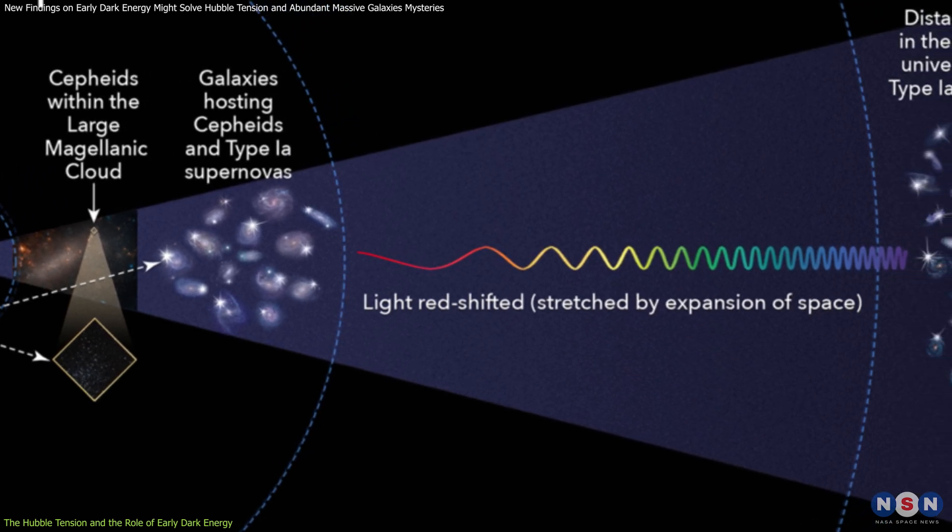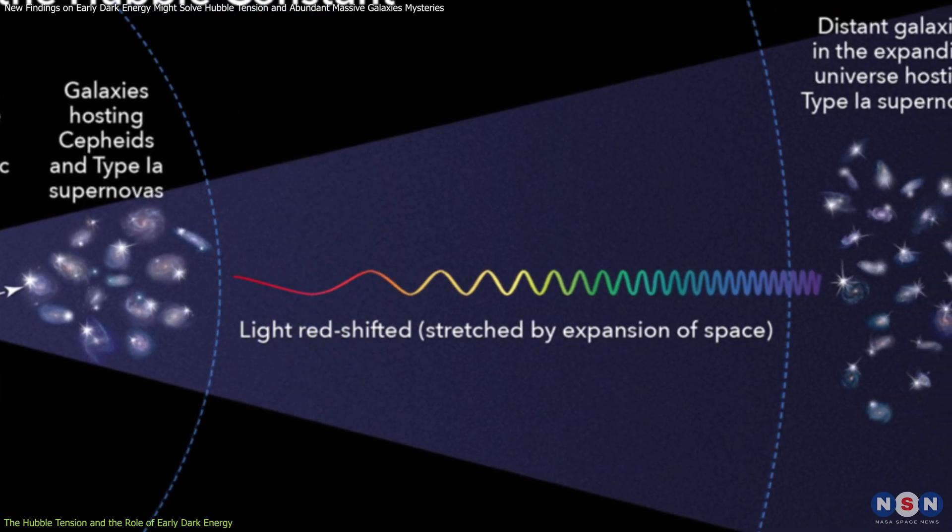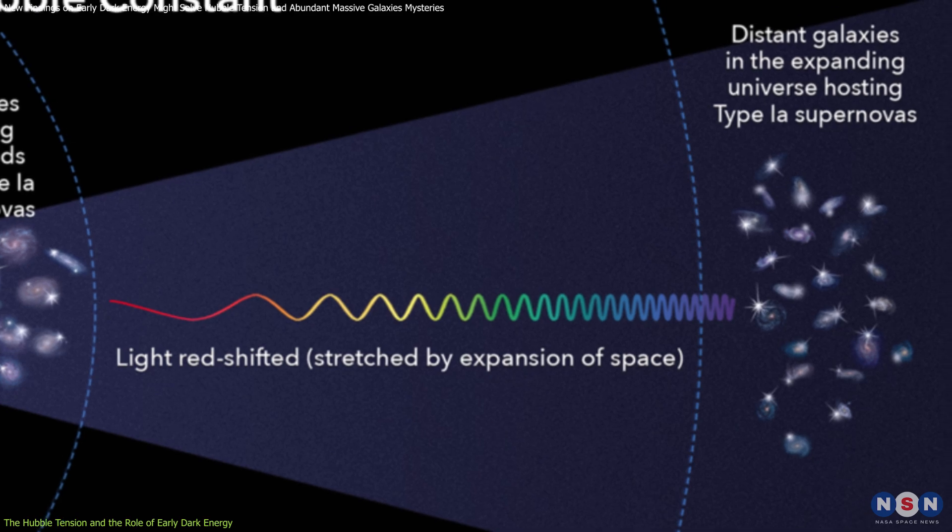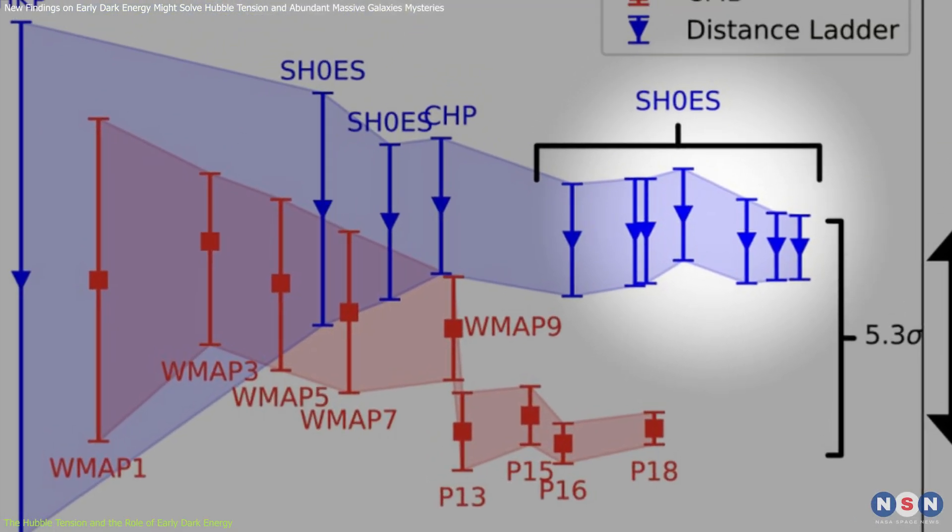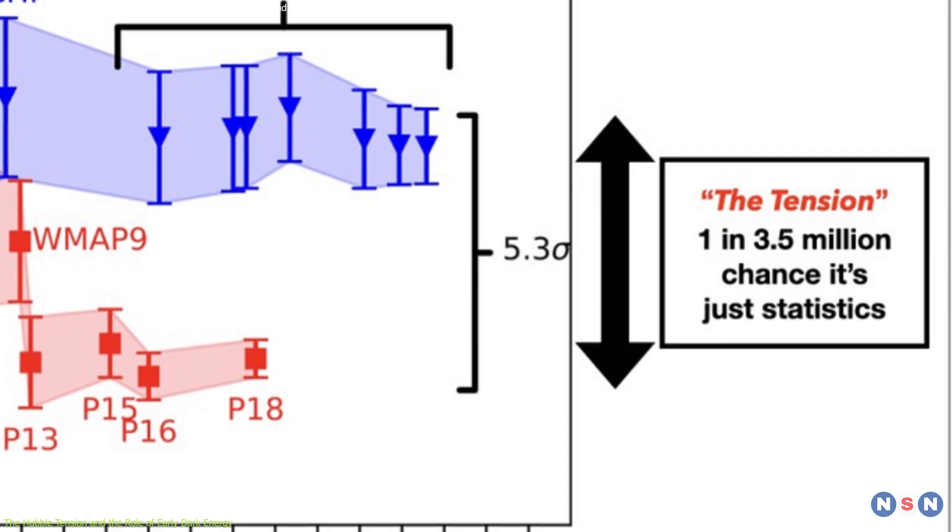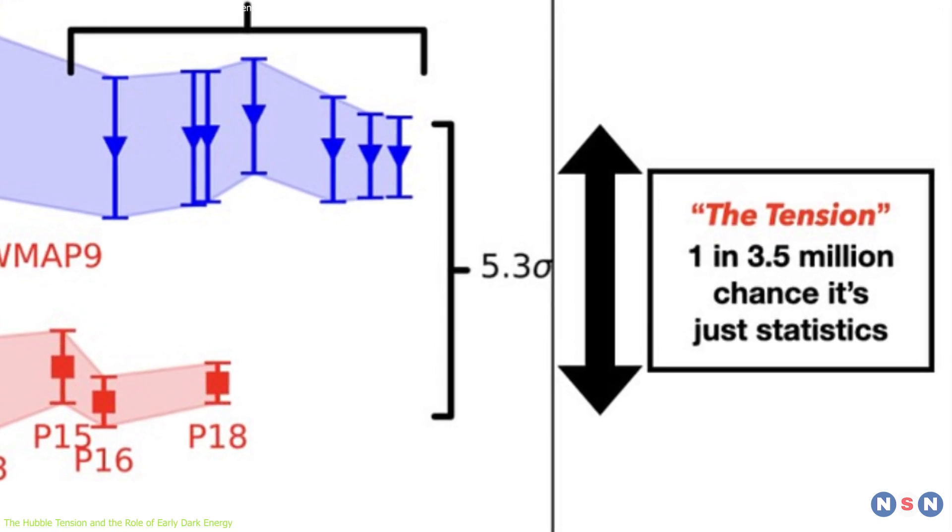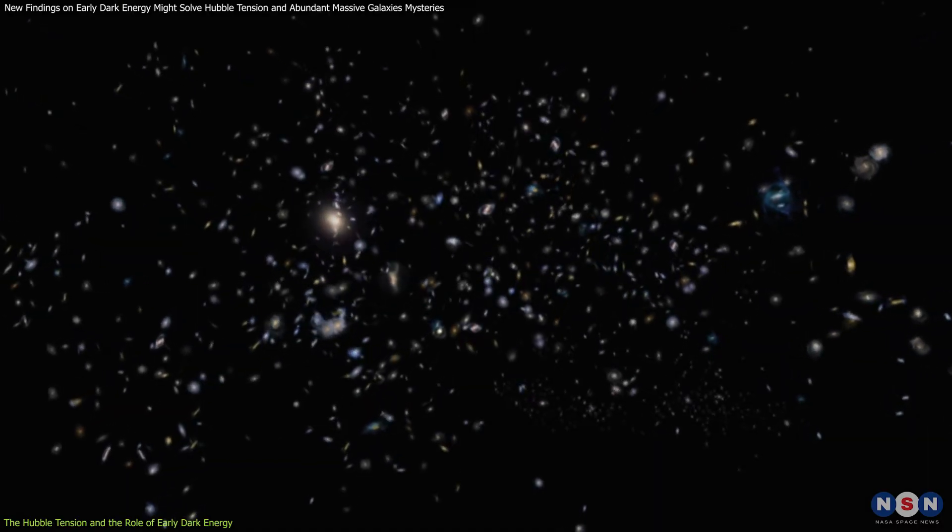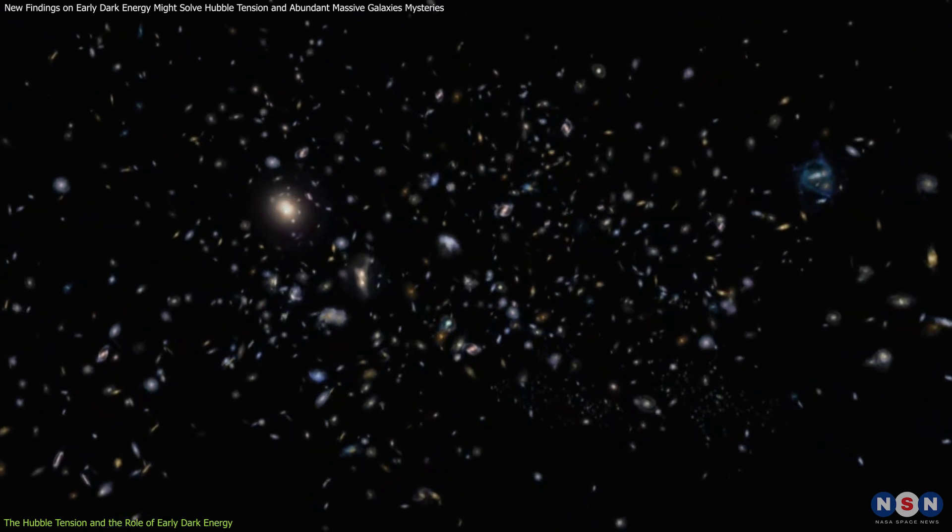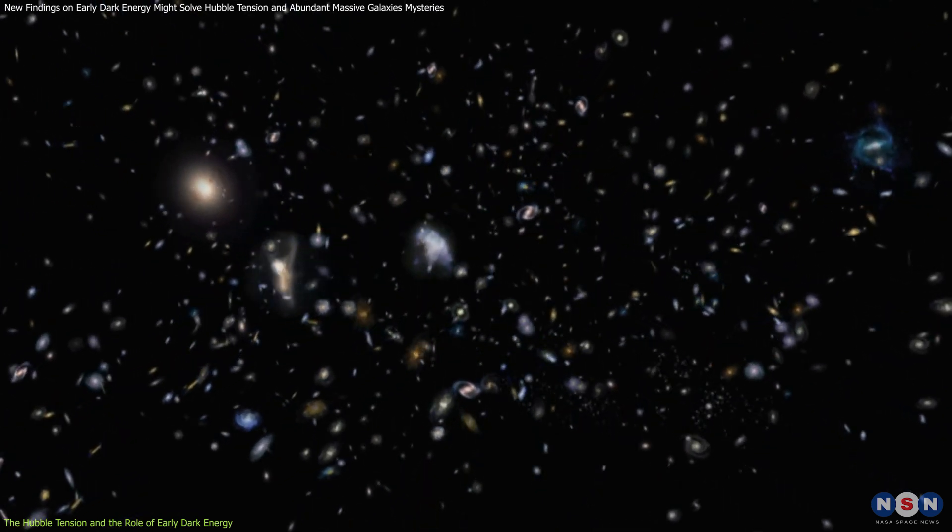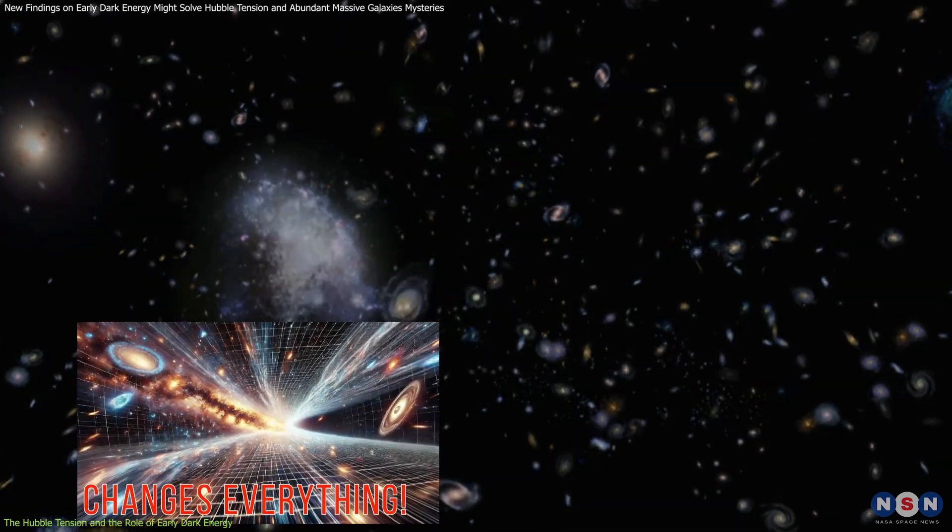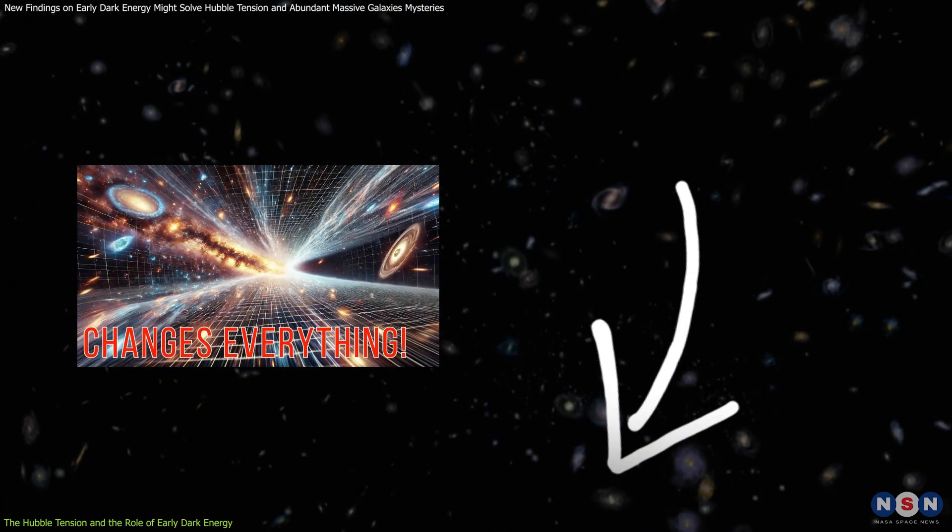On the other hand, measurements based on the brightness and distance of type 1A supernovae and relatively nearby galaxies indicate a higher rate of expansion. The difference between these values isn't just a minor inconsistency. It suggests that something fundamental about our understanding of the universe's expansion might be missing. You can watch our full video on this difference. You will find the link in the description.